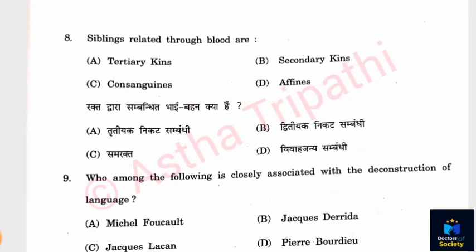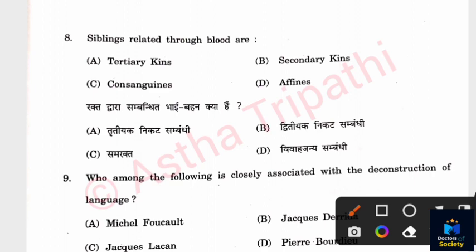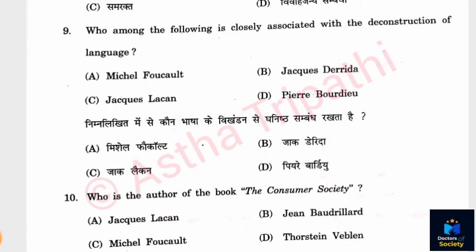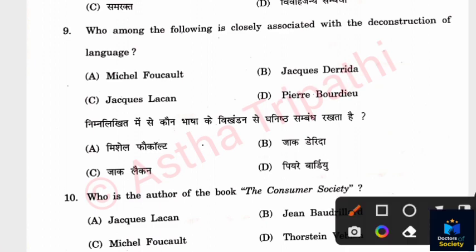Question 8: Siblings related through blood are what kind of kin? Options: Tertiary kins, Secondary kins, Consanguines, Affines. The answer is Consanguines — siblings related by blood are consanguines. Question 9: Who among the following is closely associated with the deconstruction of language? Options: Michel Foucault, Jacques Derrida, Jacques Lacan, Pierre Bourdieu. The answer is Option B — Jacques Derrida.